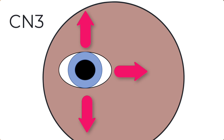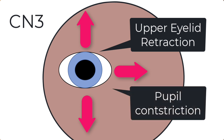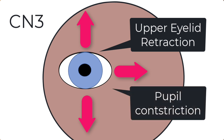Cranial nerve 3 is responsible for all other movements in all other directions. It is also responsible for opening up the eyelid, and it carries parasympathetic fibers which promote pupil constriction.